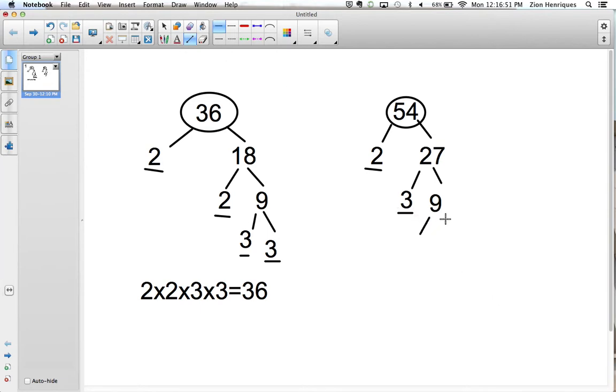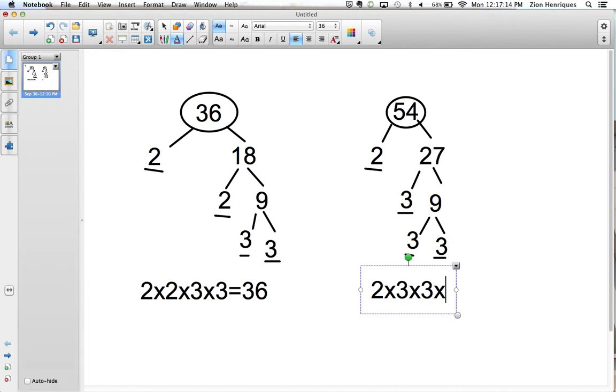Then we're going to have 3 and 3, because like we saw over here, 3 times 3 is 9. So we're just going to have the same thing right here. So now we've reached the bottom, we've reached the bottom of the prime numbers. We can't go any further. And so now we're just going to do the same thing as we did before. So we have 2 times 3 times 3 times 3 is 54.